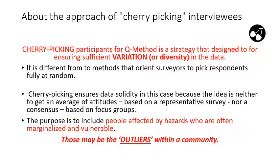Variation meaning diversity. It is different from other methods where you're instructed as a surveyor to pick respondents at random — it's the exact opposite of being random. You're being specific and deliberate. In the Q method, it ensures the solidity of the data, because the idea is neither to get an average of attitudes people have with respect to hazards, which would be a representative survey, nor consensus as in a COVACA focus group. The purpose is to include people affected by hazards who are often marginalized and vulnerable. In order to have inclusion and diversity, you need to specifically pick some outliers within a community.